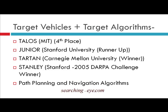The target vehicles and target algorithm are path planning and navigation algorithms. The target vehicles are: Telos from MIT, which placed 4th in the DARPA Urban Challenge 2007; Junior from Stanford University, which was runner-up in 2007; Tartan from the Tartan Racing Team of Carnegie Mellon University, which was the winner; and the Stanford vehicle, winner of the 2005 DARPA Grand Challenge.